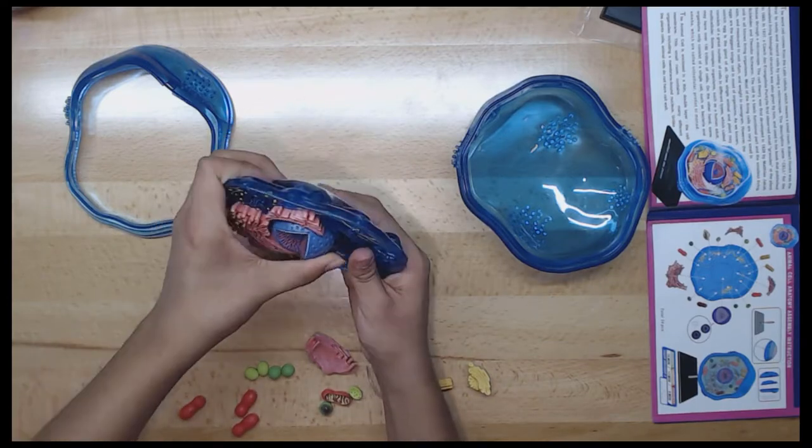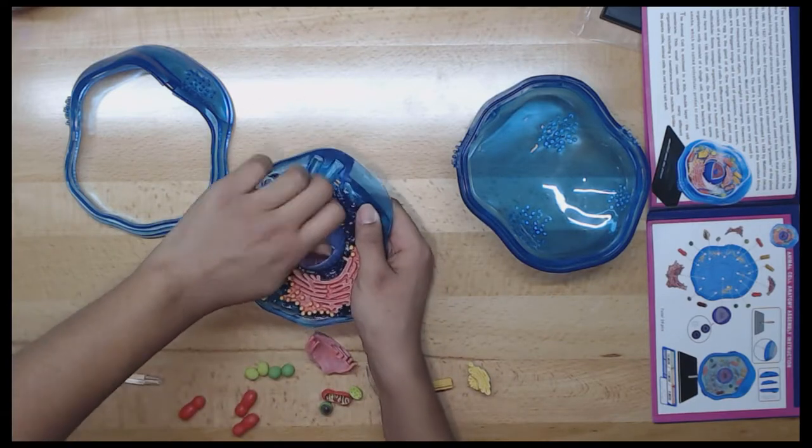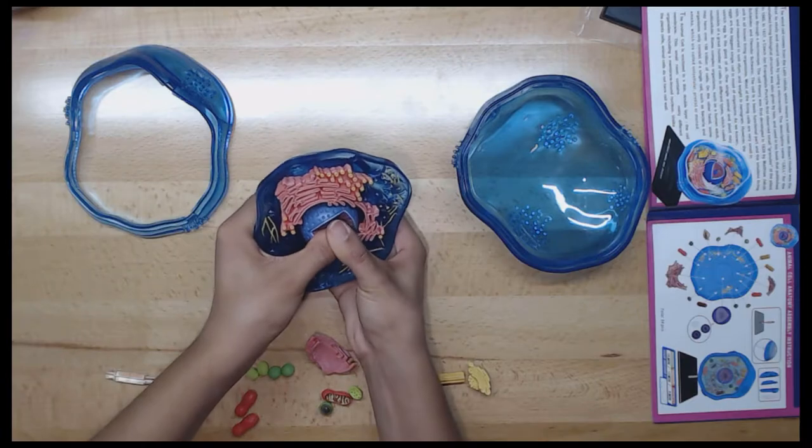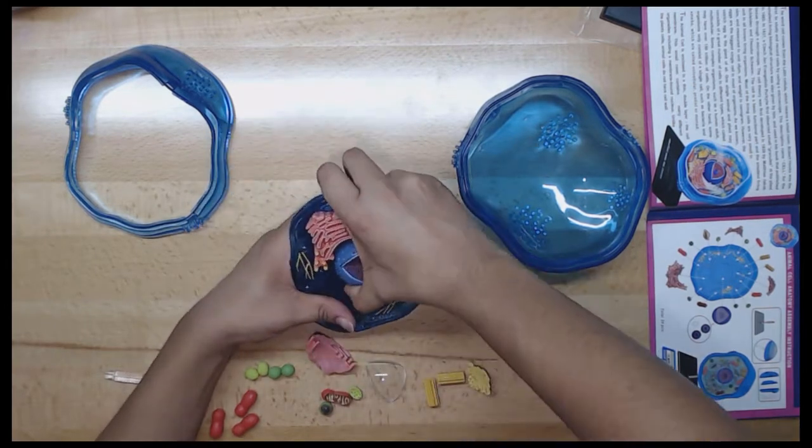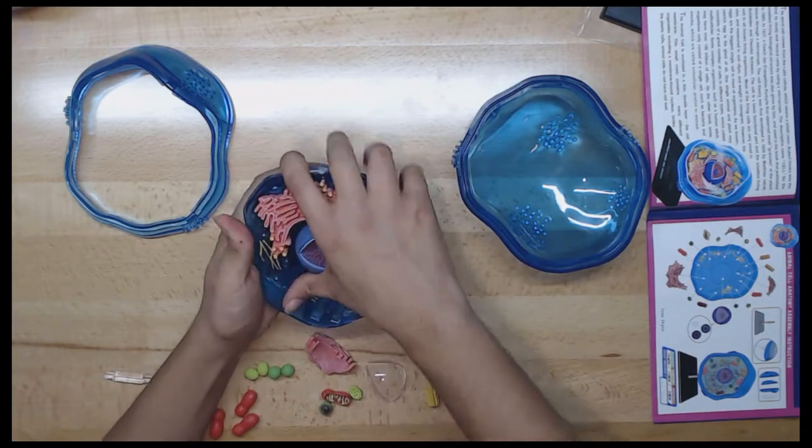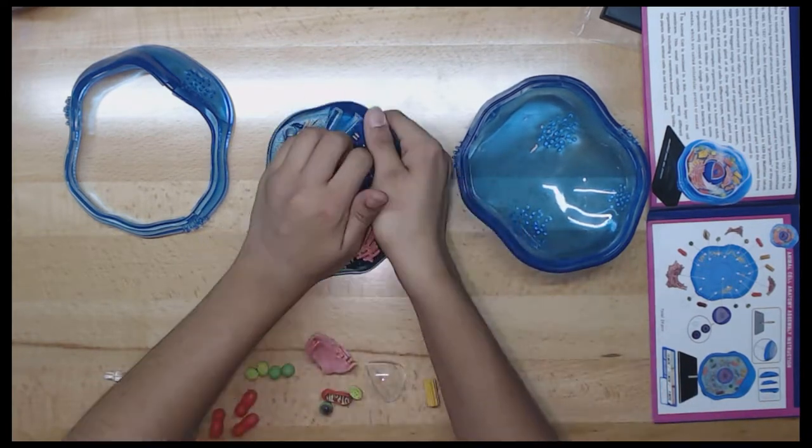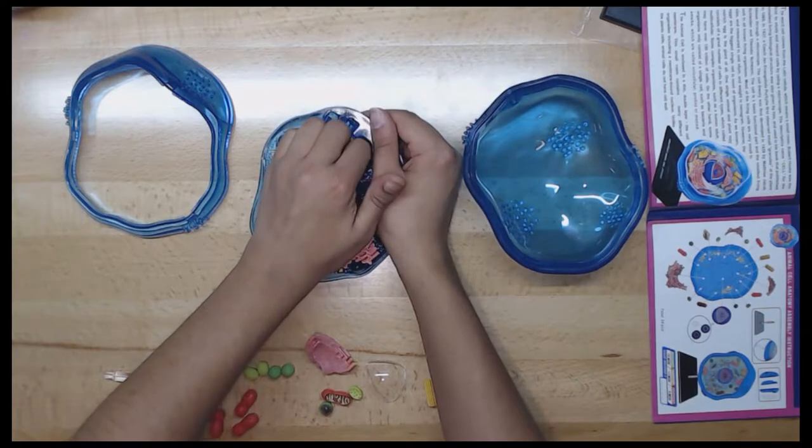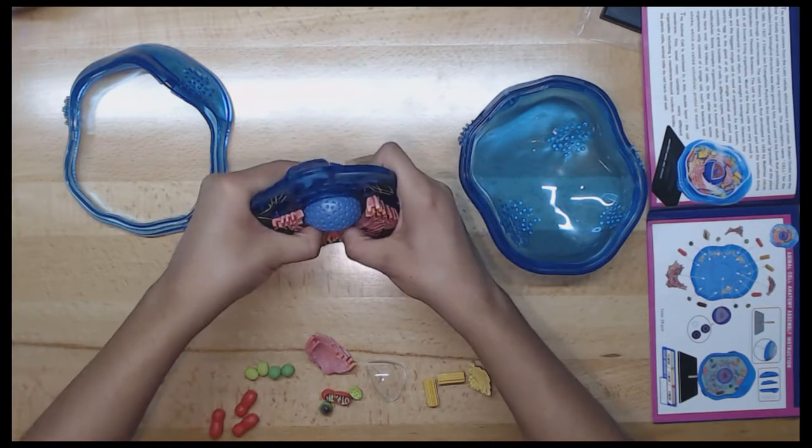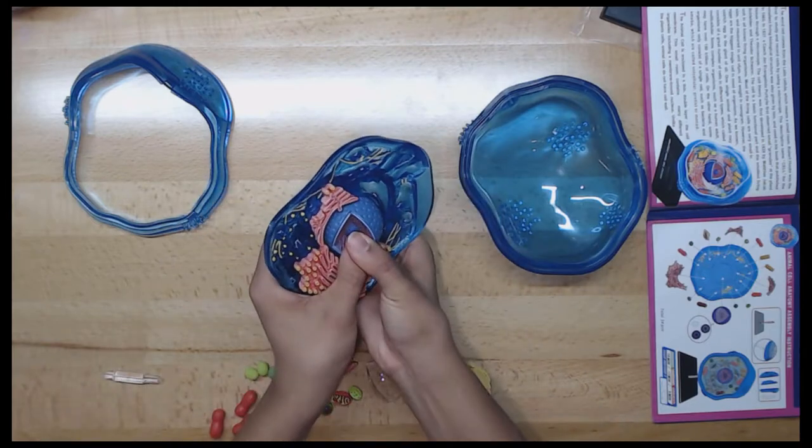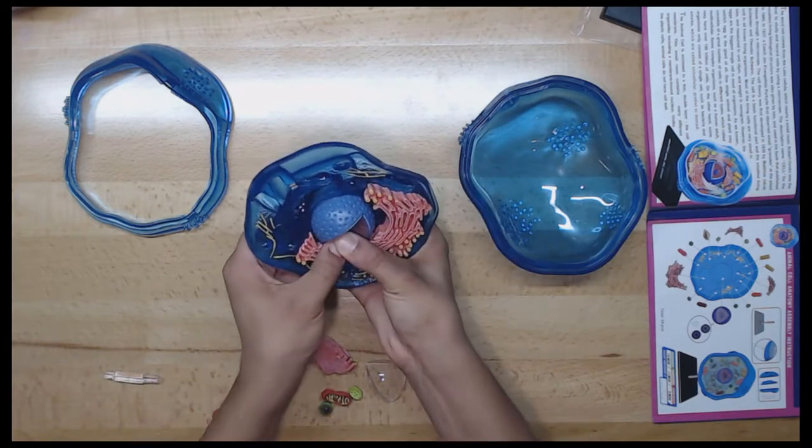Next, we have the peroxisome. It is a membrane-bound packet of oxidative enzymes. In animal cells, they protect the cell from their own production of toxic hydrogen peroxide. That is the way that white blood cells produce hydrogen peroxide to kill bacteria. Peroxisomes also help to break down the hydrogen peroxide into water and oxygen.